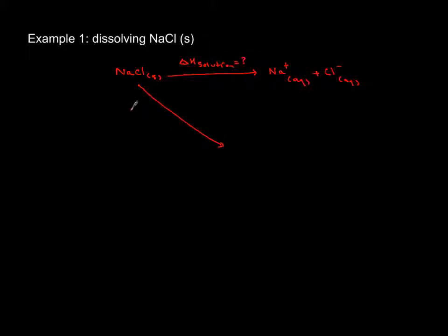Delta H lattice is 790, and you break it into gaseous ions at infinite distance away from each other.